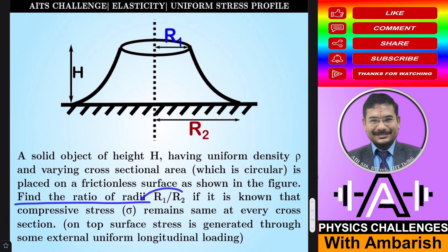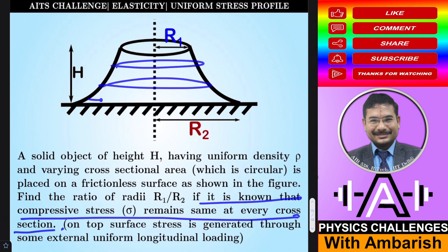Find the ratio of radii R1 to R2. This is R1 radius here and there is some R2 radius here. If it is known that the compressive stress remains same at every cross section. So we want that stress is everywhere same.